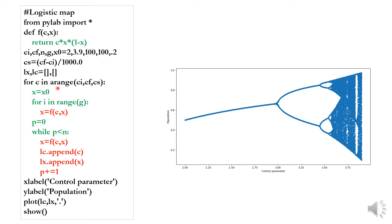We loop: for c in the range ci to cf with step c. This means for every particular value of c — starting at 2 up to 3.9 — we run the inner loop. Initially, we set the population x equal to x0. Then the inner for loop runs for i in range g, where g is 100. These 100 iterations find the first attractive point.